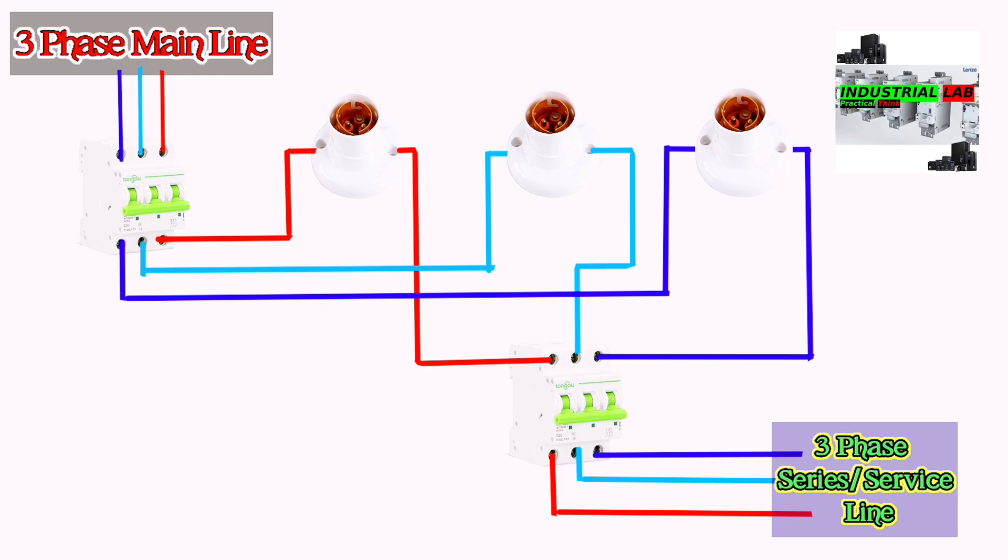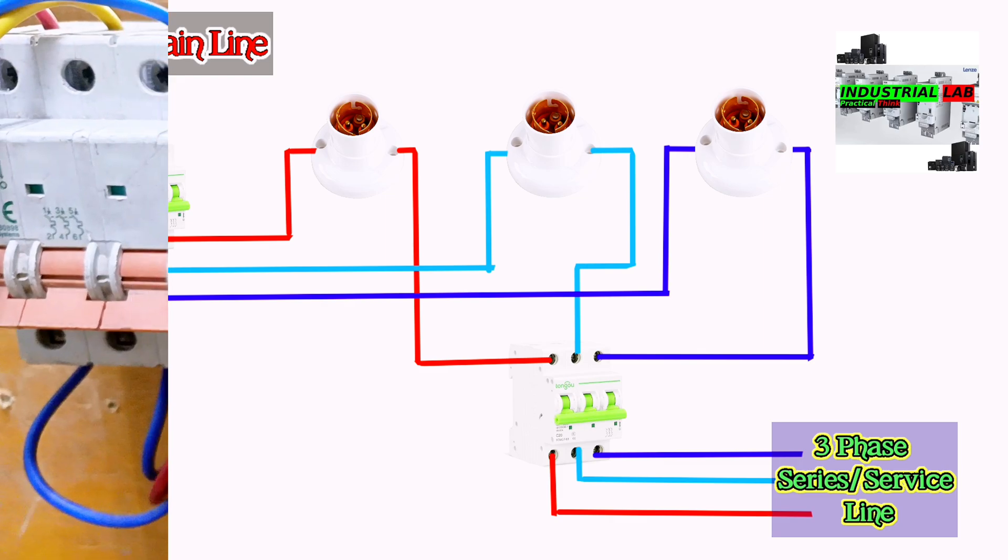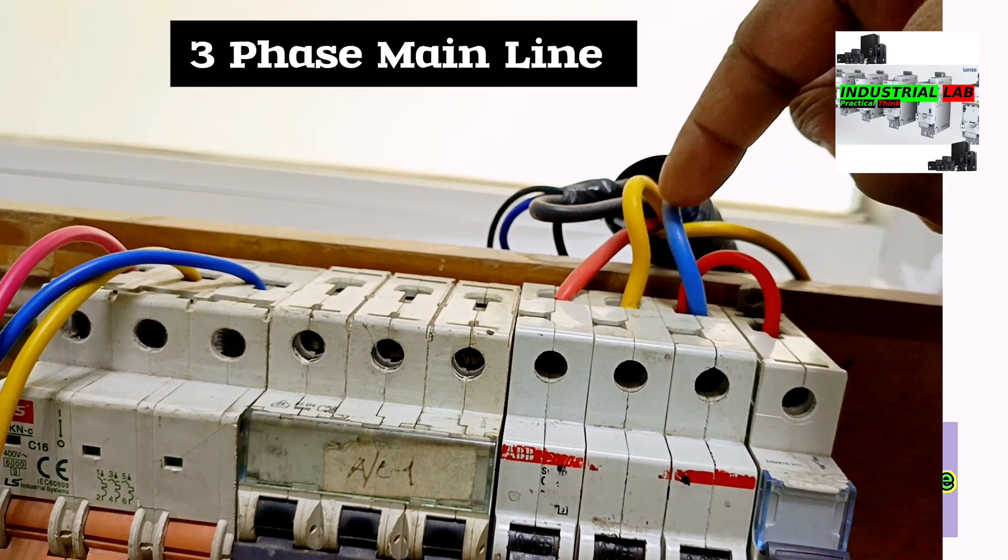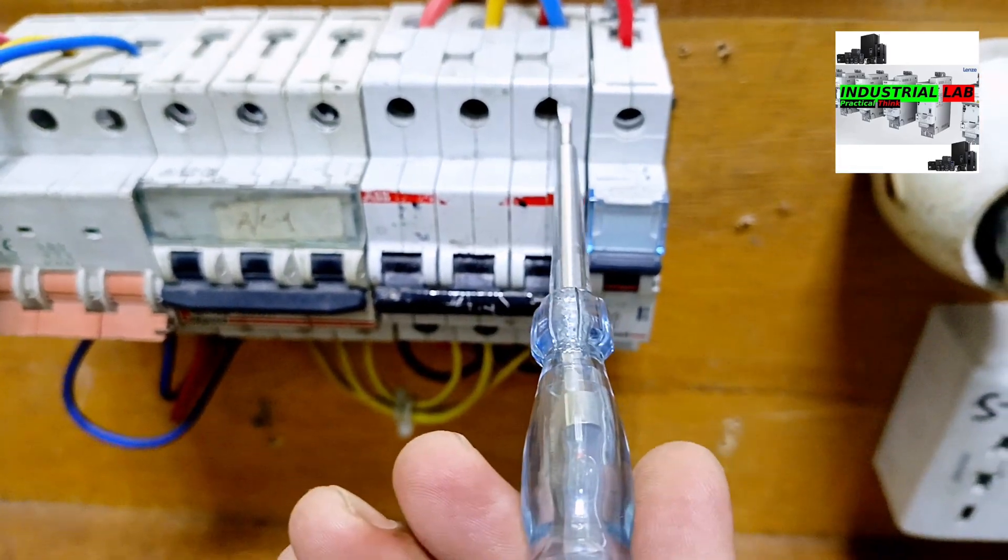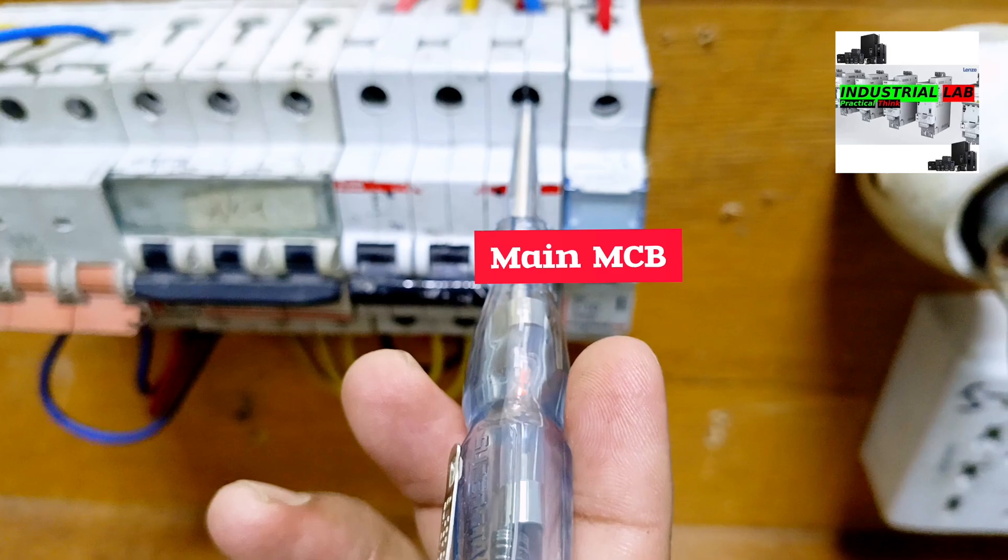Now we will show practical 3-phase service line according to this drawing. This is 3-phase main line connected to the MCB. You see the tester is lighting, that means the input power exists here.